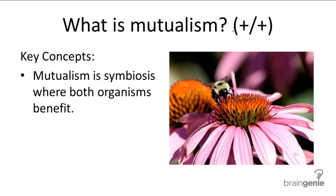A relationship between two organisms is mutual when both organisms benefit. Mutualism is a symbiotic relationship, meaning the two organisms involved have a very close association — they live in very close proximity and come in contact with each other often. In some symbiotic relationships, one organism may even live on or within the other organism.